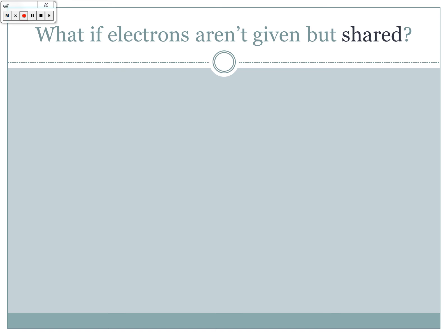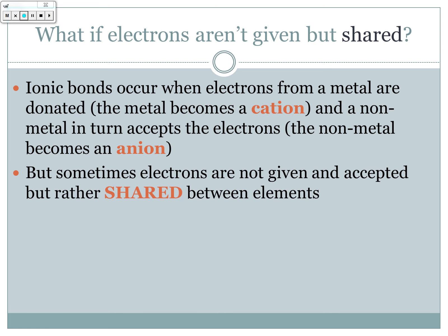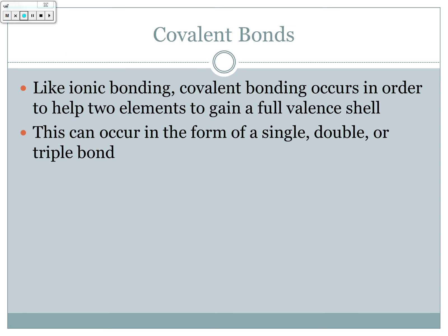So what happens if the electrons aren't given but are instead shared between elements? Ionic bonds occur when electrons from a metal are donated — the metal becomes a cation and a nonmetal accepts the electrons, becoming an anion. Sometimes, however, electrons are not given and accepted but rather shared. These types of bonds are called covalent bonds and they occur between nonmetal and nonmetal elements. Like ionic bonding, covalent bonding occurs to help two elements gain a full valence shell.